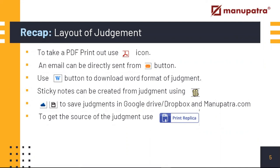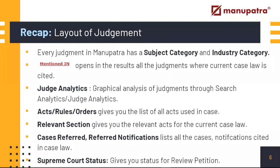If you want to see the source of the judgment, the Print Replica option is available — it gives you the Judas copy along with a scanned copy from the journal. Any judgment that comes to Manupatra is given a particular subject category and industry category. There is also a Mentioned In button if you want to see where a judgment has been cited in other cases.